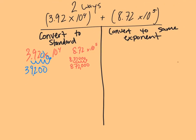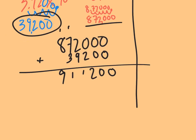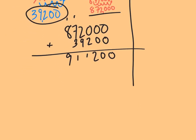So now if I'm going to add these together, I can just stack up those two standard notation numbers and then add them. I have more digits in the second number, so that goes on top: 872,000. Then I line up 39,200 from the right, moving left. Adding them together — carrying as needed — I'm left with 911,200.